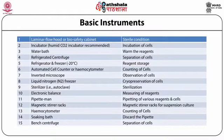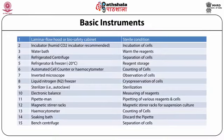An inverted microscope is required for observing cells and checking contamination. A liquid nitrogen facility is also required — if you have a constant supply of animal cell culture, you should maintain a stock stored in liquid nitrogen. A sterilizer in the form of autoclave, microwave oven, or heat oven is needed. Pipettors, magnetic stirrer, hemocytometer for counting cells, soaking baths to discard pipettes, and bench centrifuge to separate cells from media are also basic instruments.